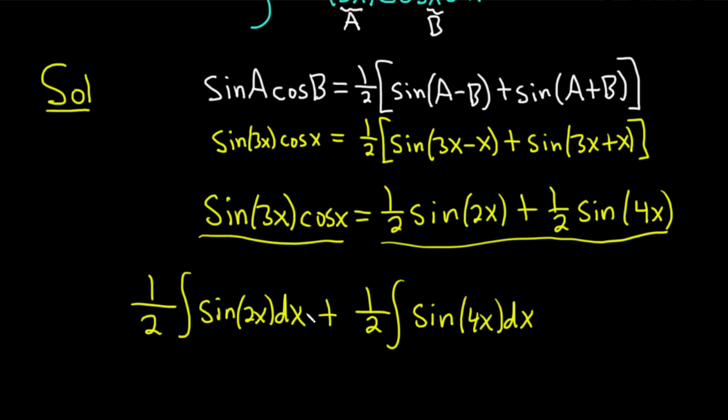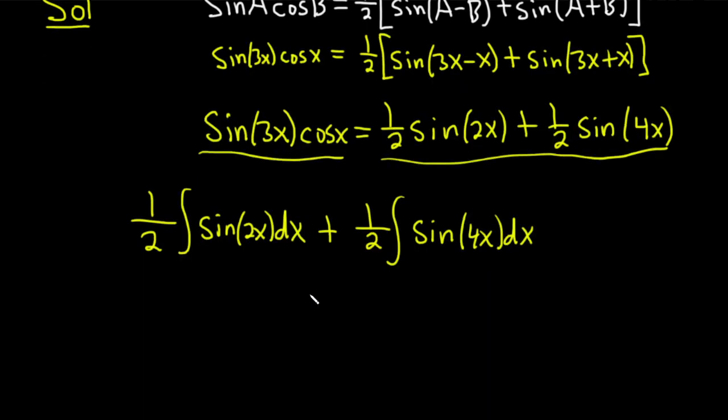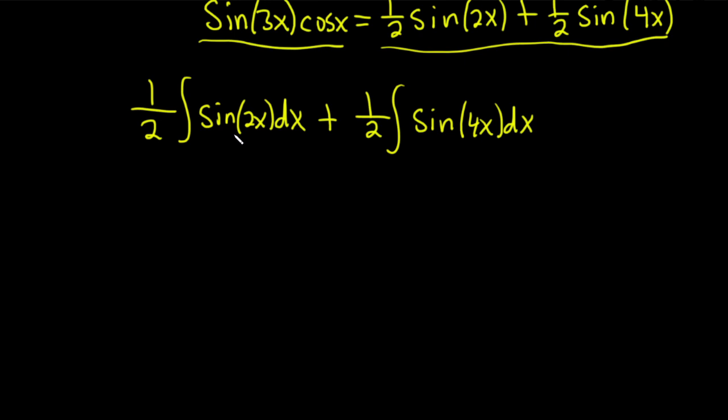So to integrate these, you can make two different u substitutions. You could let u be 2x in the first integral, and then you can let u be 4x in the second integral. Or you can invoke a very powerful formula. If you have the integral of the sine of, say, b times x with respect to x, you're working backwards, right? So you're trying to integrate sine. The derivative of cosine is negative sine. So when you integrate sine, you're going to get a negative cosine.